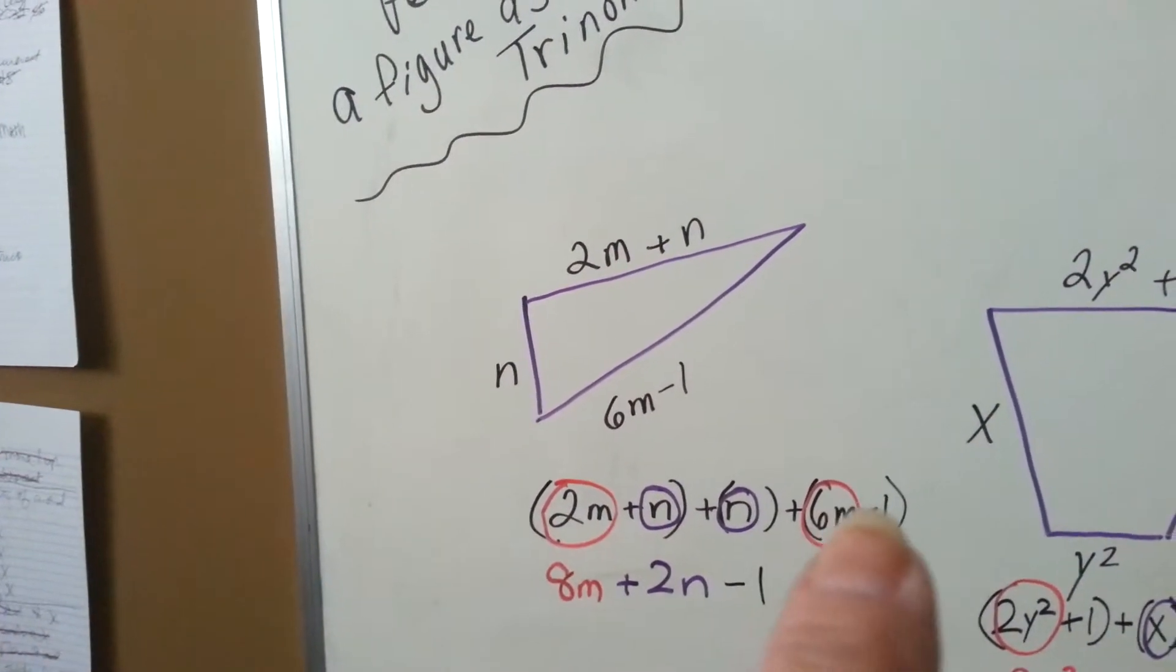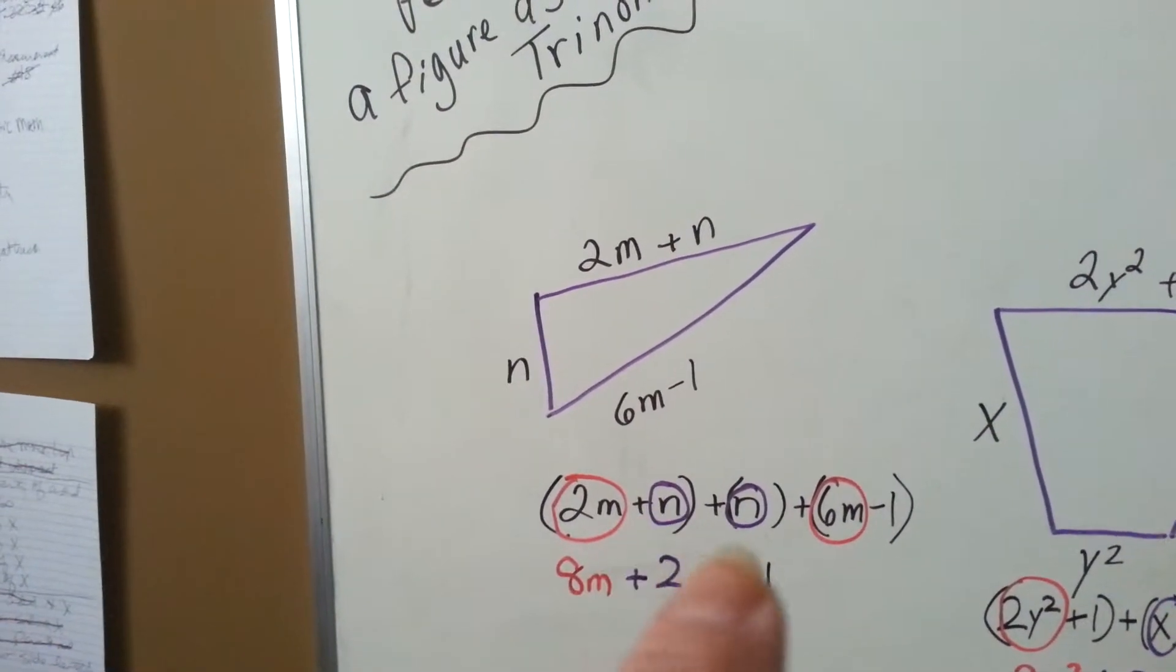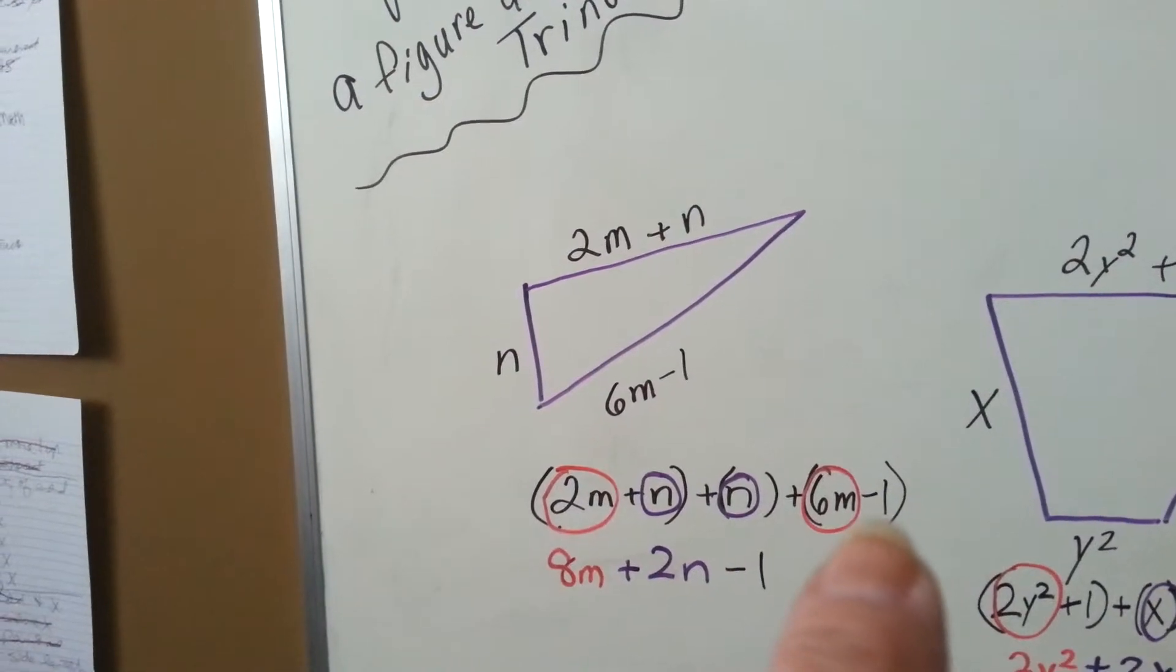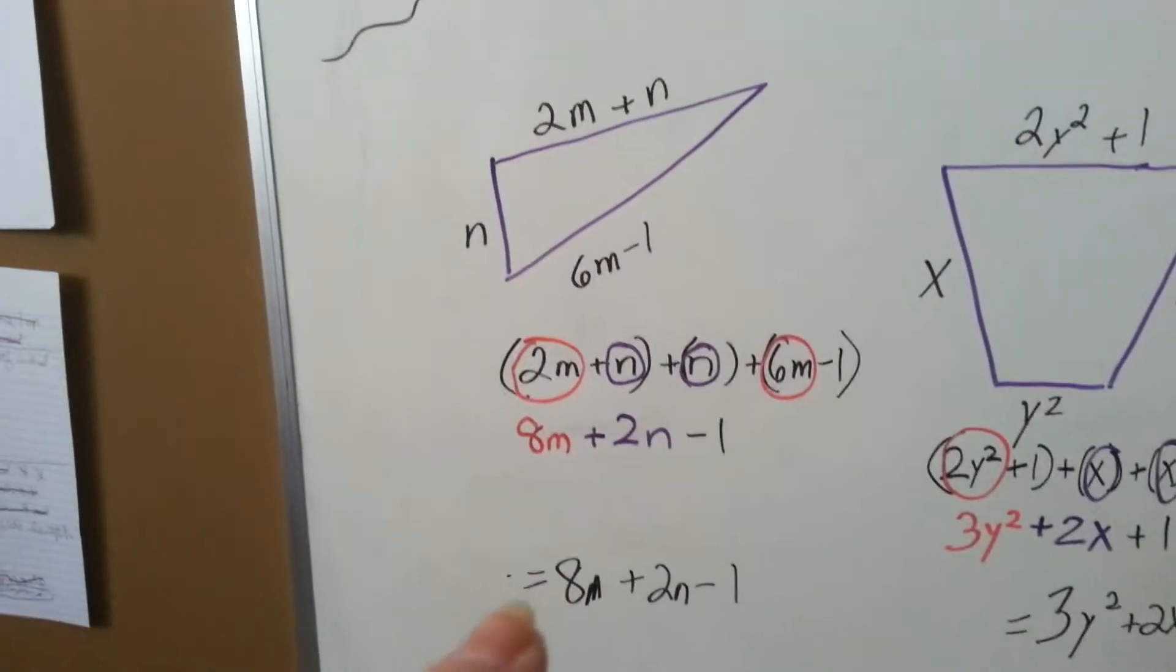The 2m and the 6m can be combined into 8m. This n and this n can be combined to be 2n. And then we've got our minus 1 by itself, and that's the answer.